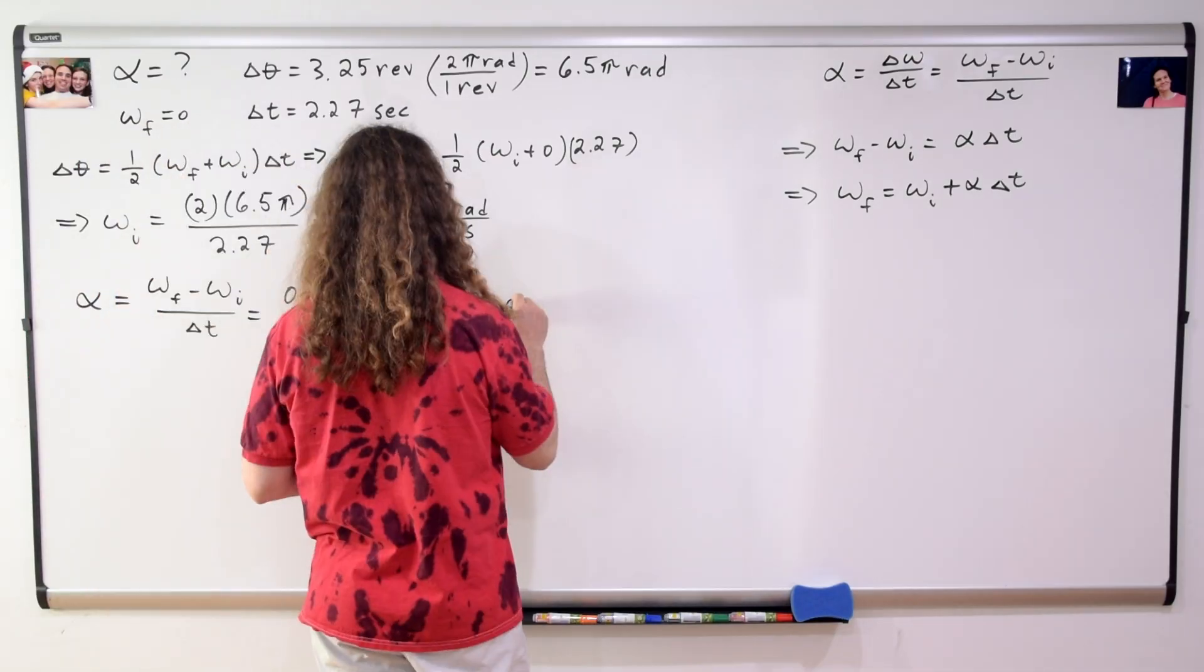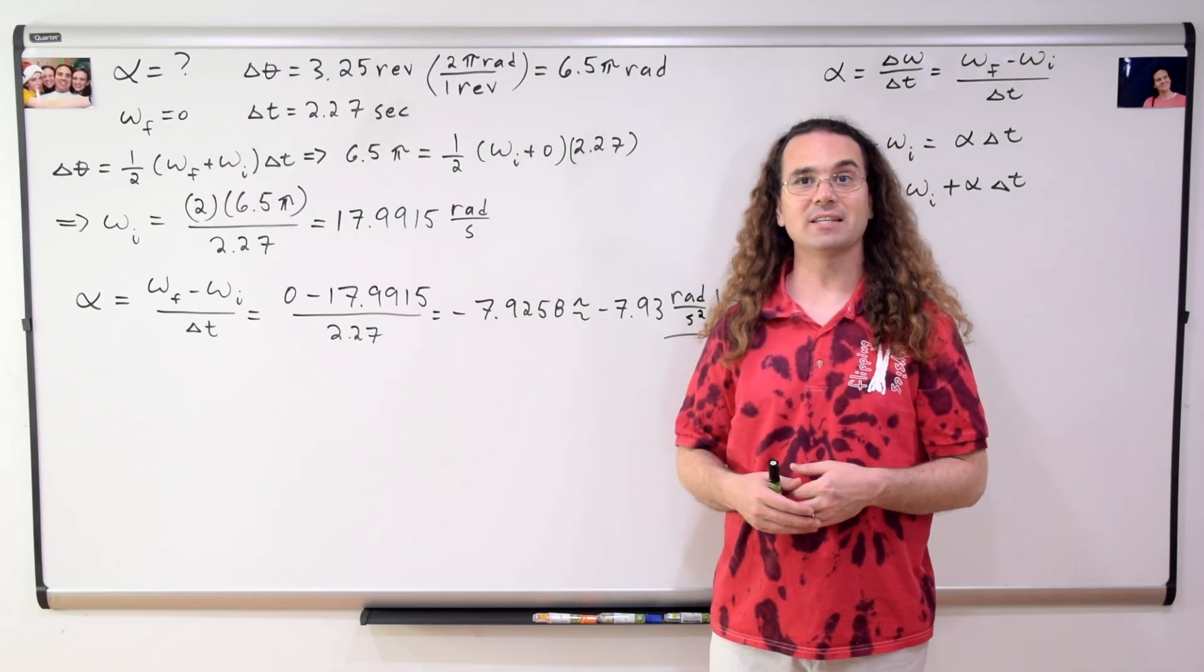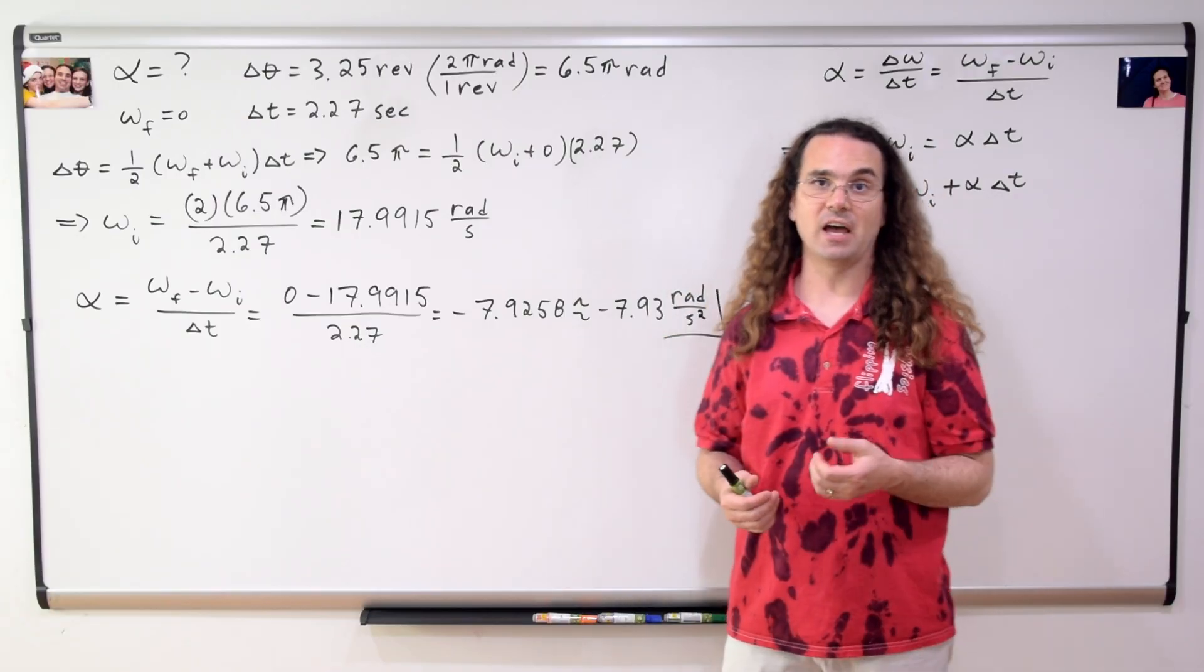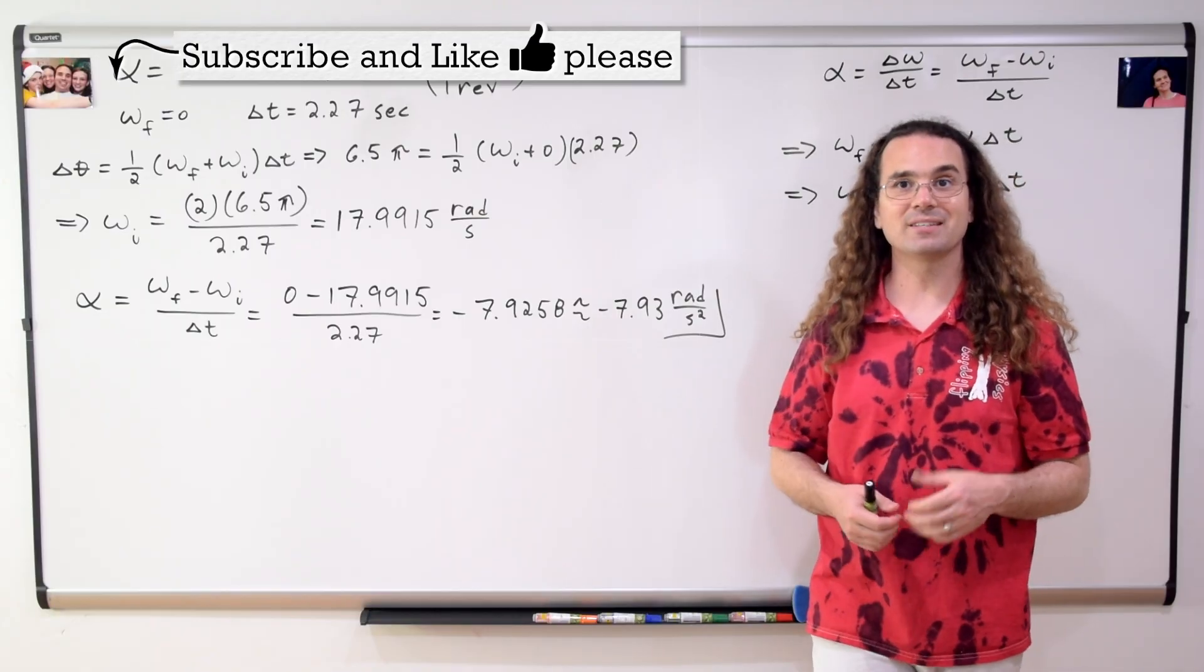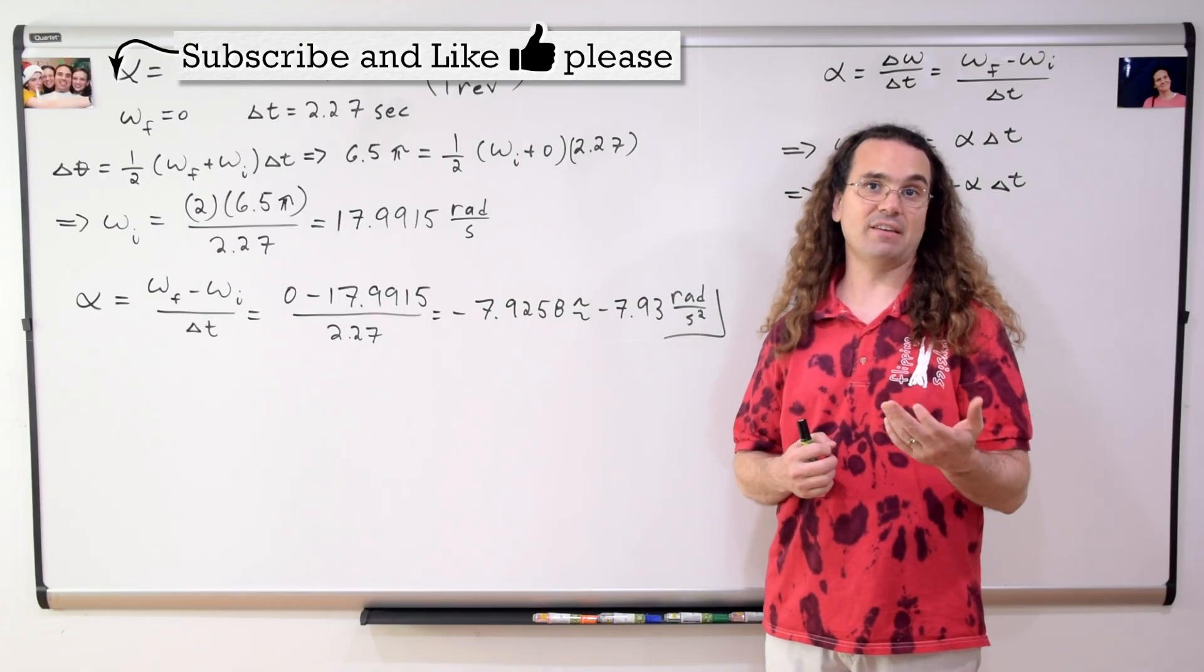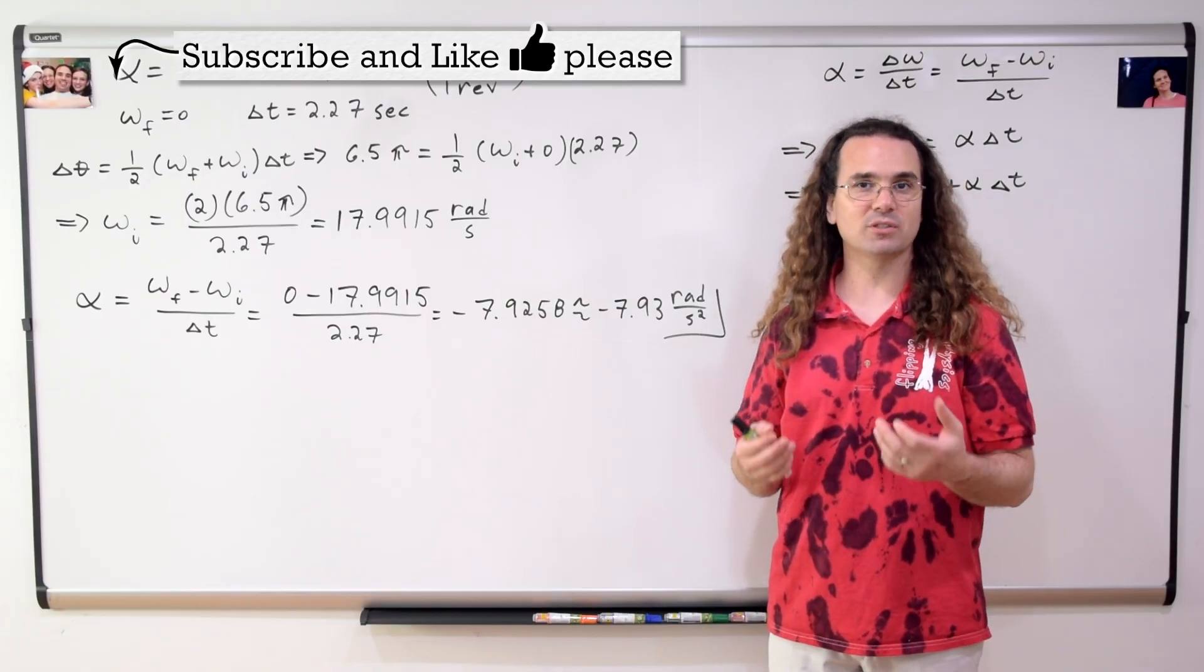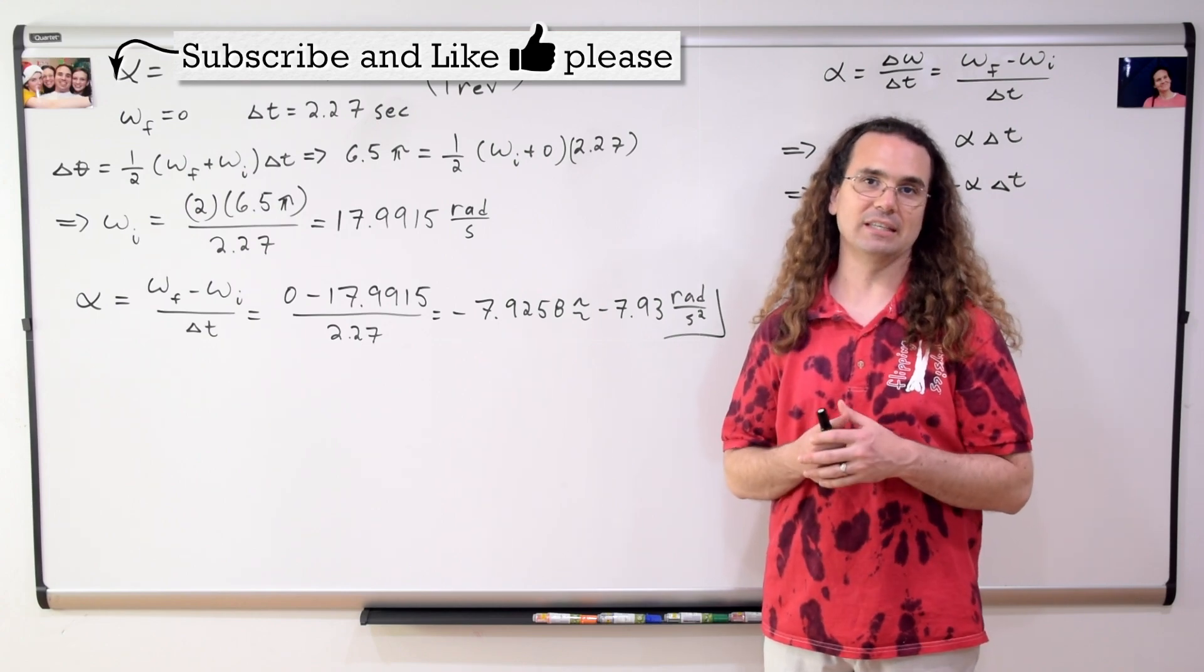Very nice, Bobby. Okay, I'll finish the problem. Angular acceleration equals angular velocity final minus angular velocity initial all divided by change in time. So that is 0 minus 17.9915 all divided by 2.27 which is negative 7.9258 or negative 7.93 radians per second squared with three significant digits.